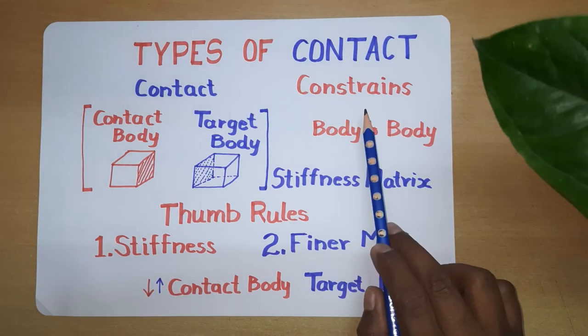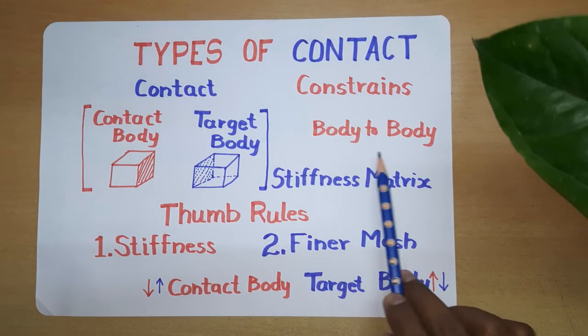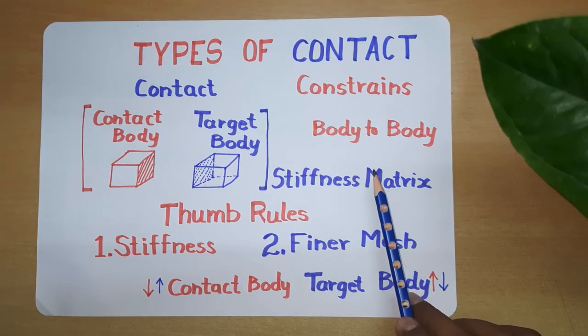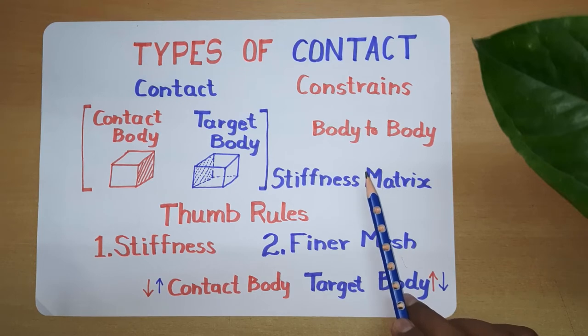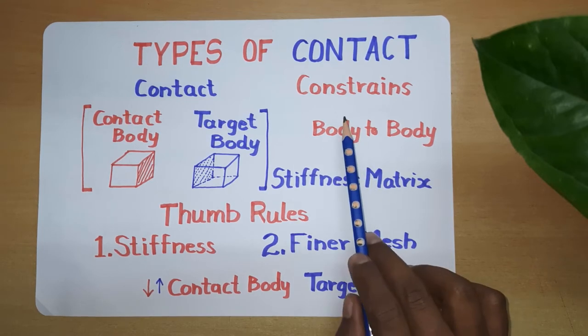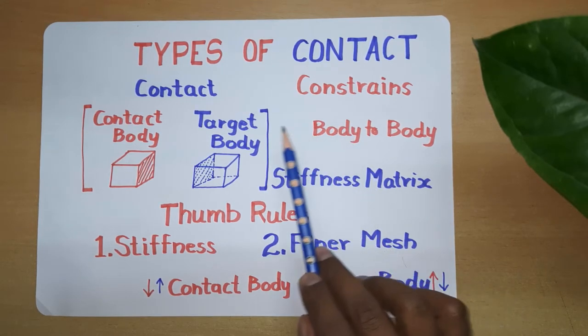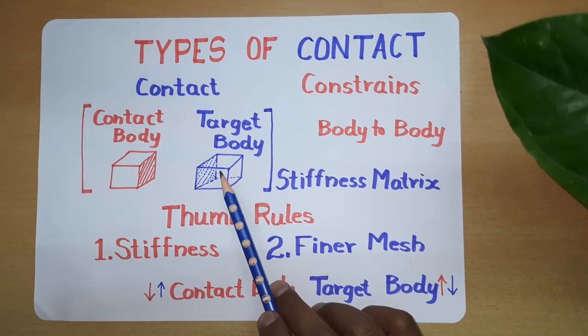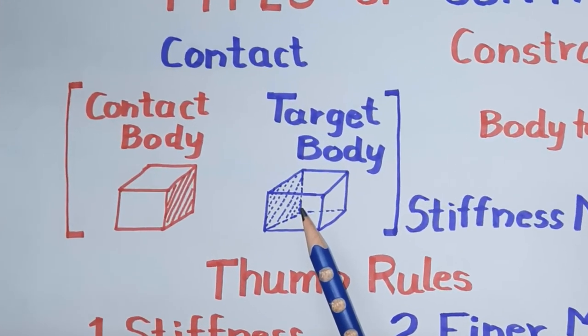A constraint is nothing but a body-to-body connection which is given in a 3D modeling software to define an assembly. When we take this assembly into an analysis software, we have to define a contact.